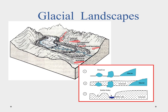We also hear a lot about kettle lakes. As the glacier retreats, it leaves behind chunks of dead ice. These chunks get buried down, creating depressions, and as they melt they form kettle holes which then fill in with water — we call them kettle lakes. These are really popular up in the Minnesota area.